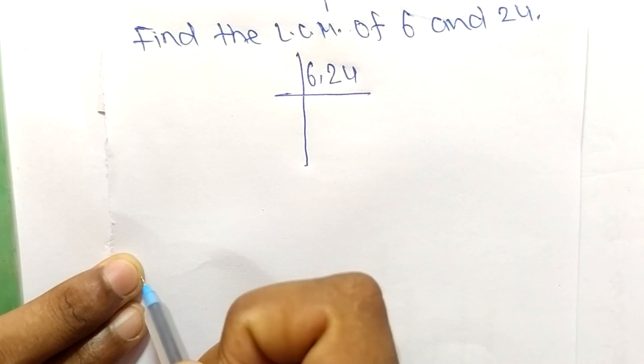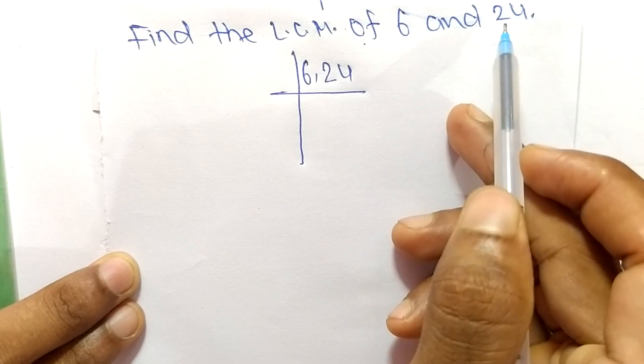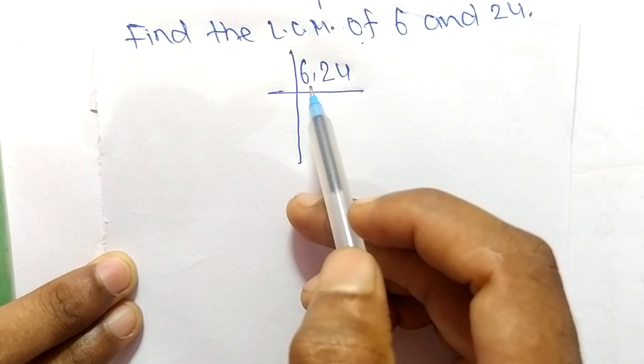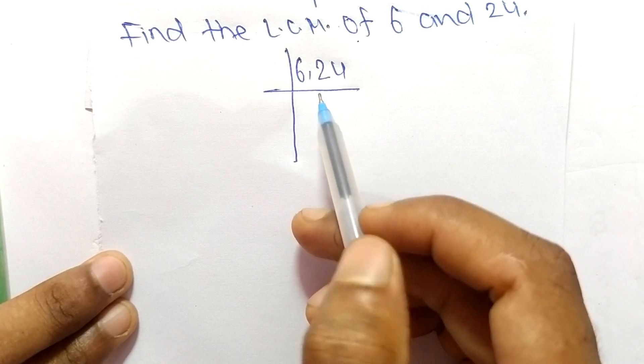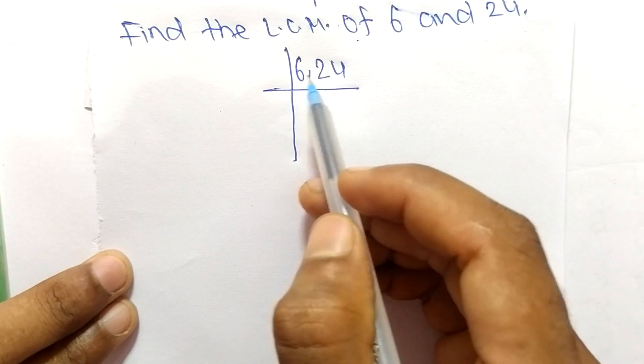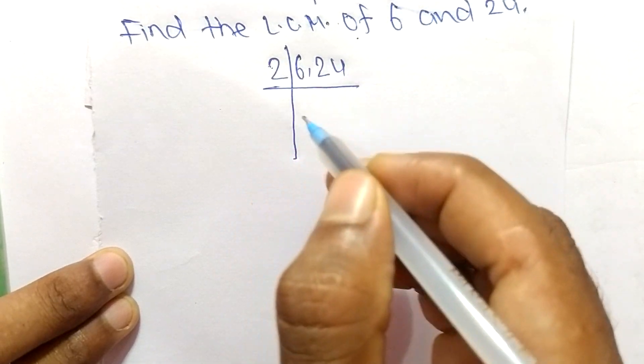Today in this video we shall learn to find the LCM of 6 and 24. To find the LCM, first we choose the lowest number which can exactly divide both numbers. The lowest number is 2.